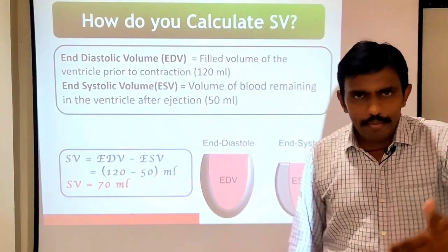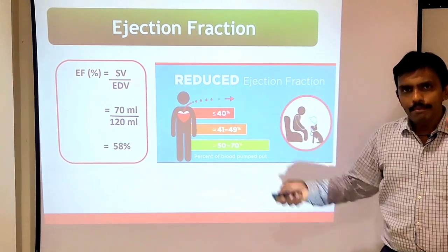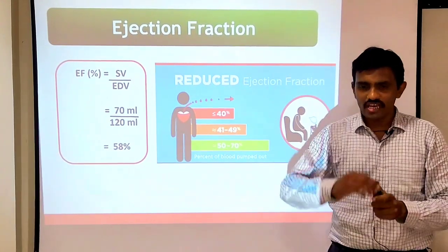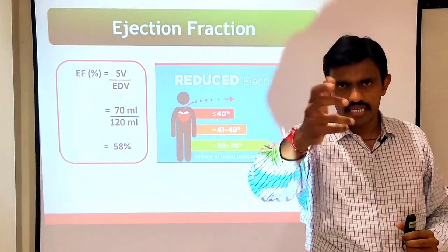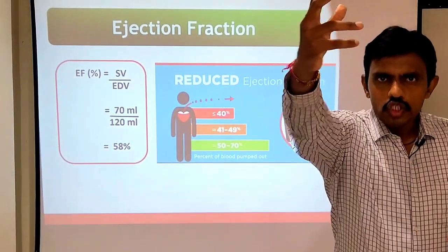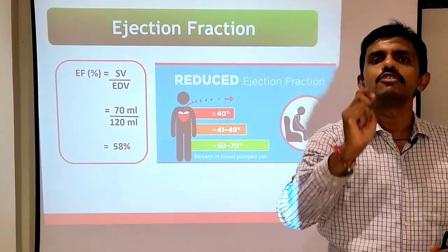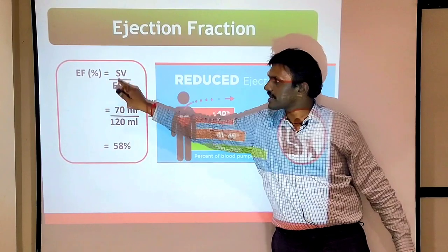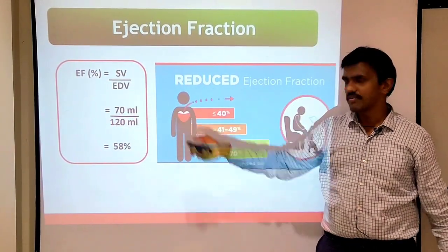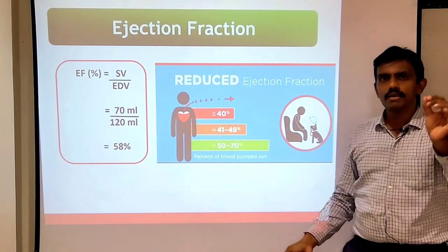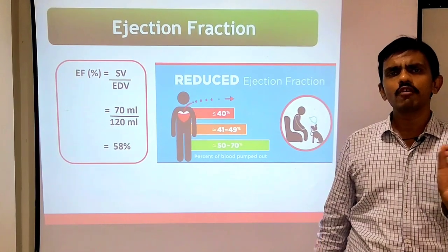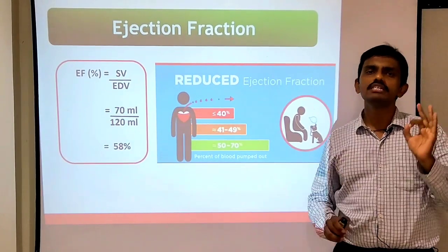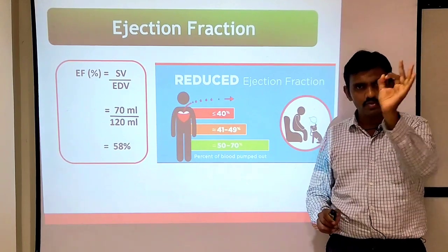The reason I explain stroke volume is because of the important terminology: ejection fraction. Ejection fraction means the percentage of blood ejected from the heart with each stroke. Ejection fraction equals stroke volume divided by end diastolic volume: 70 divided by 120. Normal ejection fraction is approximately 58–60%, with a wider range of 55–70%.